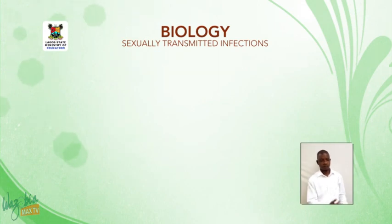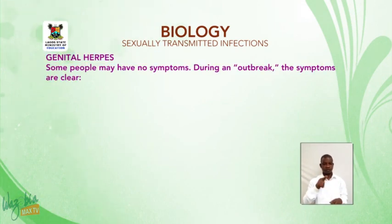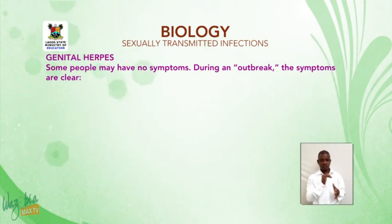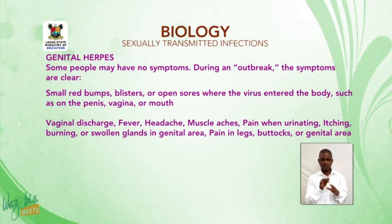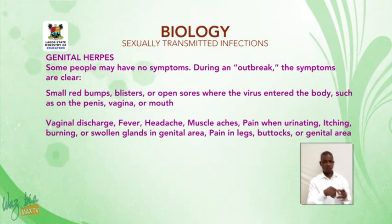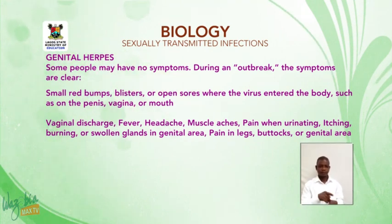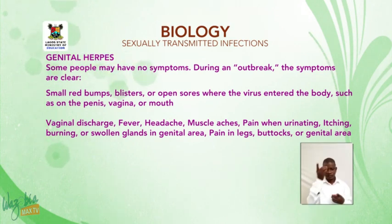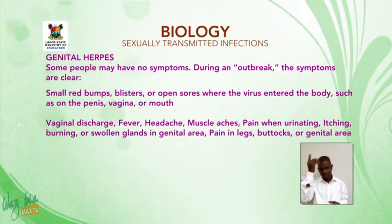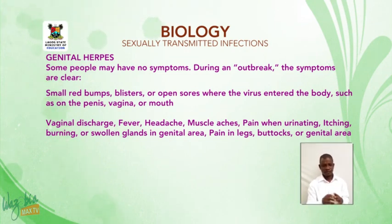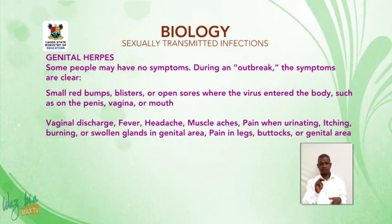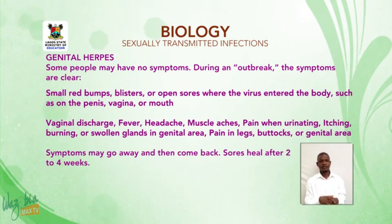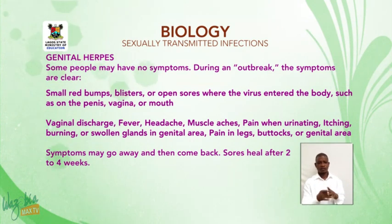For genital herpes, some people may have no symptoms during an outbreak. Symptoms include small red bumps, blisters, or open sores where the virus enters the body, such as on the penis, vagina, or mouth; vaginal discharge; fever; headache; muscle aches; pain when urinating; itching; burning; swollen glands; and pain in the genital area, legs, or buttocks. Symptoms may go away and then come back, and sores heal after two to four weeks.